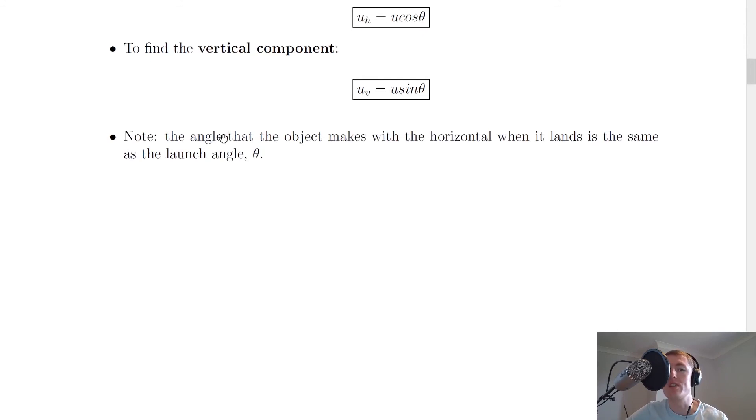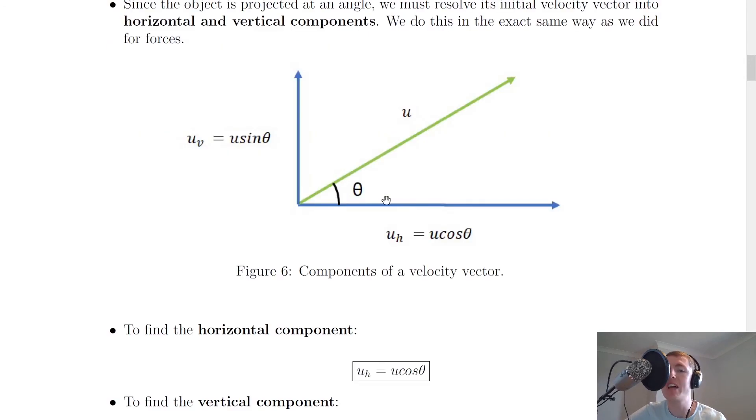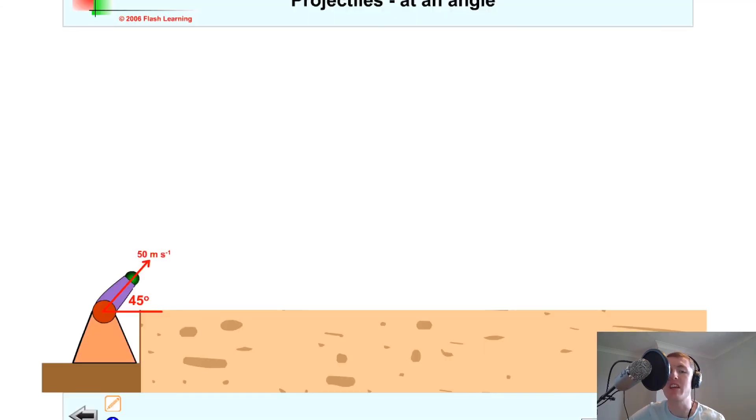Lastly it says to note that the angle that the object makes with the horizontal when it lands is the same as the launch angle theta. So this angle that the projectile makes with the horizontal as it's launched is going to be the exact same as the angle that the projectile makes as it lands. And a way of seeing this if we go back to our animation here where we're launching at an angle of 45 degrees with respect to the horizontal, we're saying that this angle in here is also going to be 45 degrees with respect to this horizontal. And that's because the second half of the motion is going to mirror the first half of the motion.